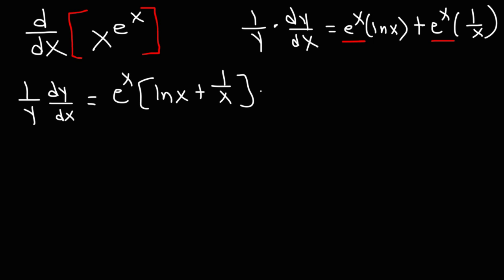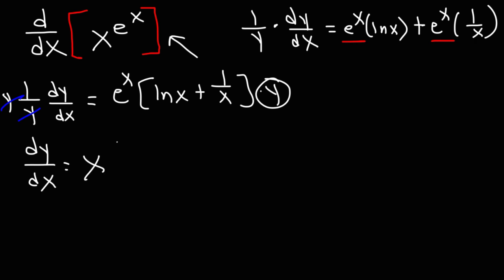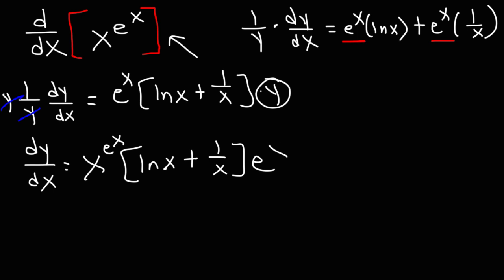Now we multiply both sides by y and replace y with our original expression. So dy/dx equals x raised to the e^x, times e^x times (ln x + 1/x). This is the final answer — the derivative of x raised to the e^x.